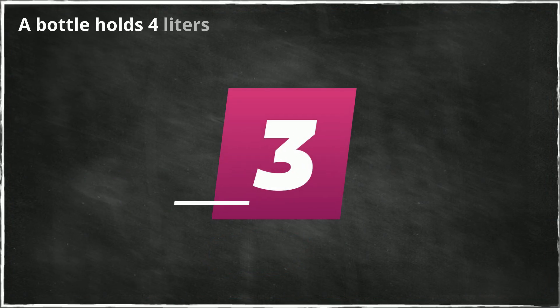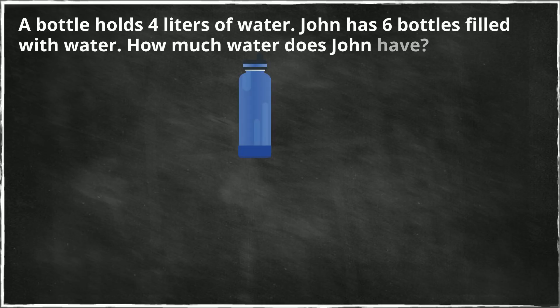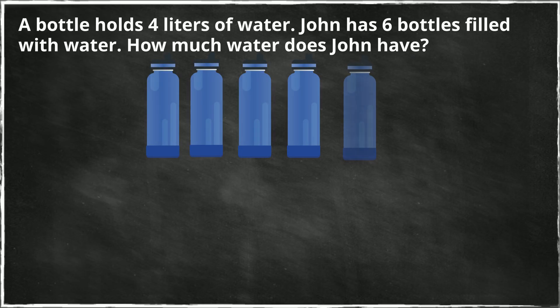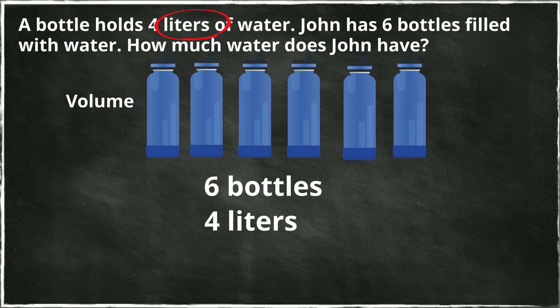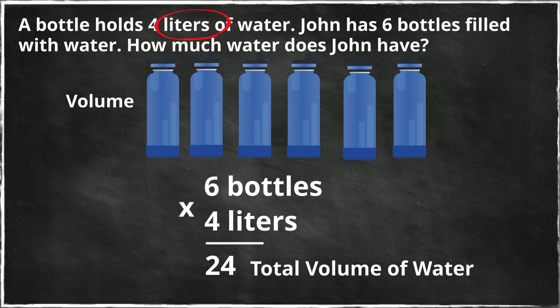A bottle holds four liters of water. John has six of these bottles filled up with water. How much water does John have? First, what are we measuring? I see 'liters,' and remember, liters is your clue that we're measuring volume. We have six bottles and each bottle can hold up to four liters of water. So we're going to go six times four, which is 24. So John has 24 liters of water in total.